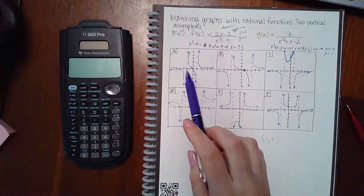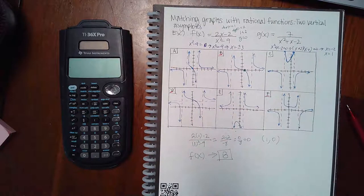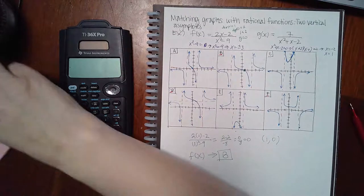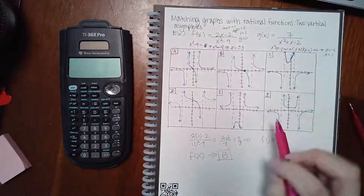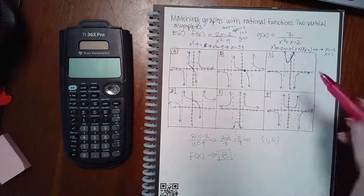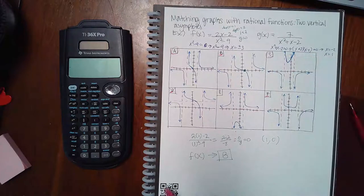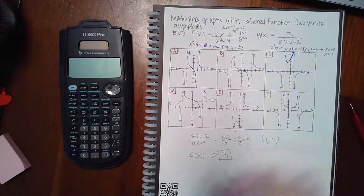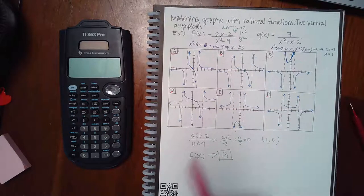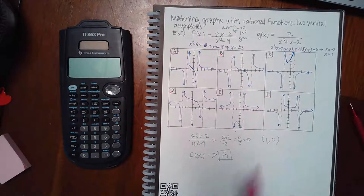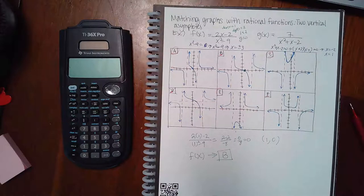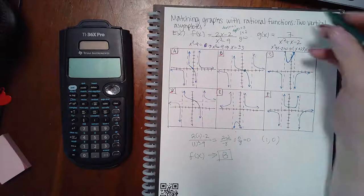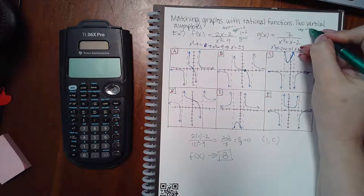Now for g(x), the vertical asymptotes are at negative 2 and positive 1. Graph A is a contender, C is a contender, and E is a contender. B, D, and F are eliminated because their vertical asymptotes are at negative 3 and 3.